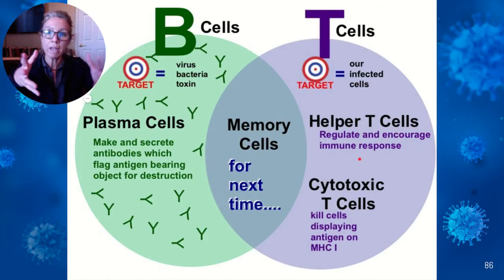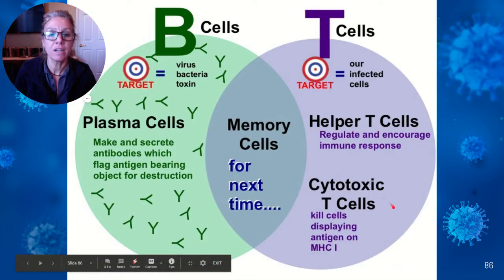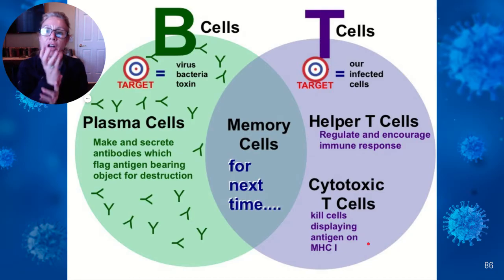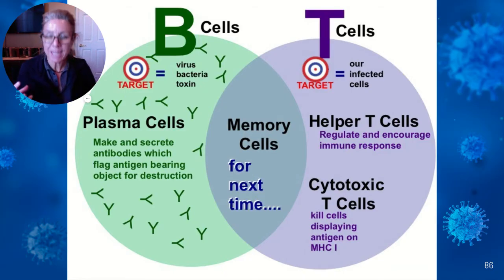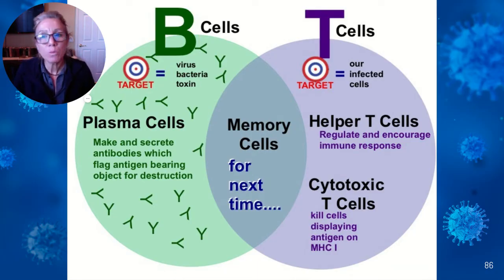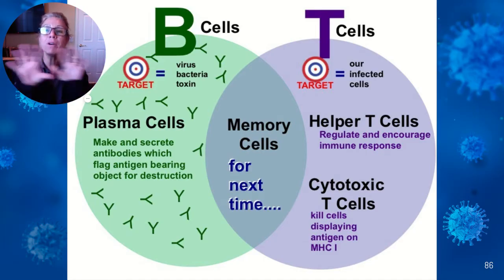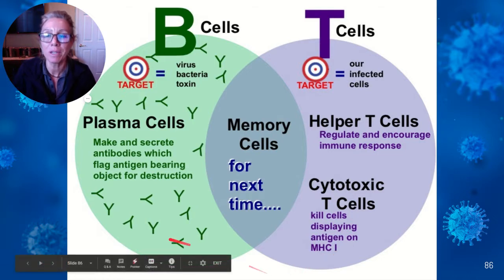T cells also make memory cells for the future, but they make helper T cells which regulate and coordinate your entire immune response — like the generals of the army — and they also make cytotoxic T cells, which kill anything that displays an antigen on an MHC1. Remember: if you display an antigen on MHC1, you're done; if you display on MHC2, you will be helped. Both B and T cells are very specific — their receptors can only recognize one or maybe two antigens — so we must have millions of varieties.